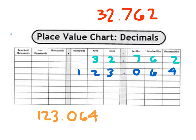Here's our last number we'll put in. Why don't you try? I'll write it out here, and then you write it on your page as to what number we are talking about, and let's see if you can even say it. Did you say 67 and 251 thousandths?